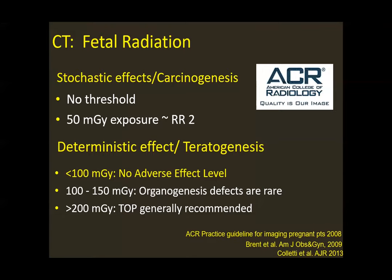When talking about fetal radiation, we consider two options. The first is the stochastic effect, associated with carcinogenesis, where there is no threshold — any amount of radiation can potentially lead to carcinogenesis. From animal studies and atomic bomb survivor studies, approximately 50 milligray of exposure is associated with doubling the relative risk for childhood cancer. On the other hand, the deterministic effect — teratogenesis — has certain thresholds. Below 100 milligray, there is no adverse effect. Between 100 and 150 milligray, there are potential effects on organogenesis. Above 200 milligray, those effects are so likely that termination of pregnancy should be considered.